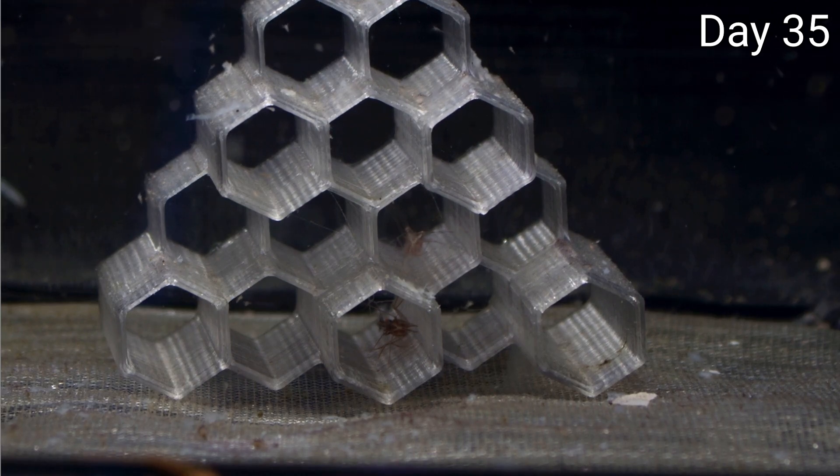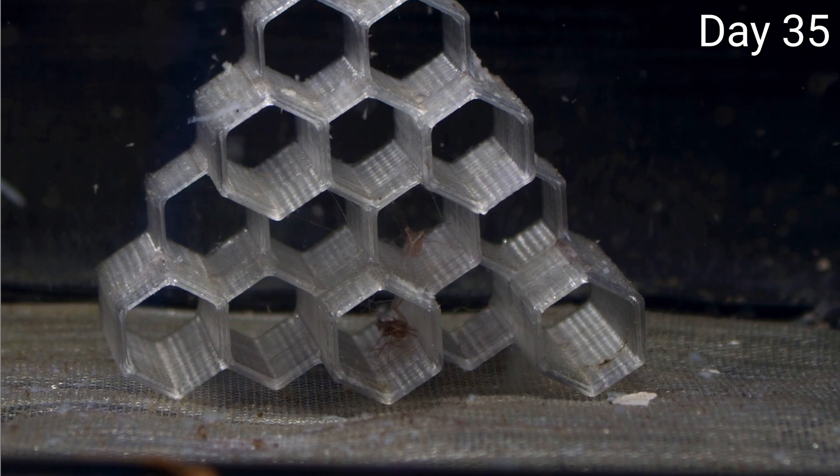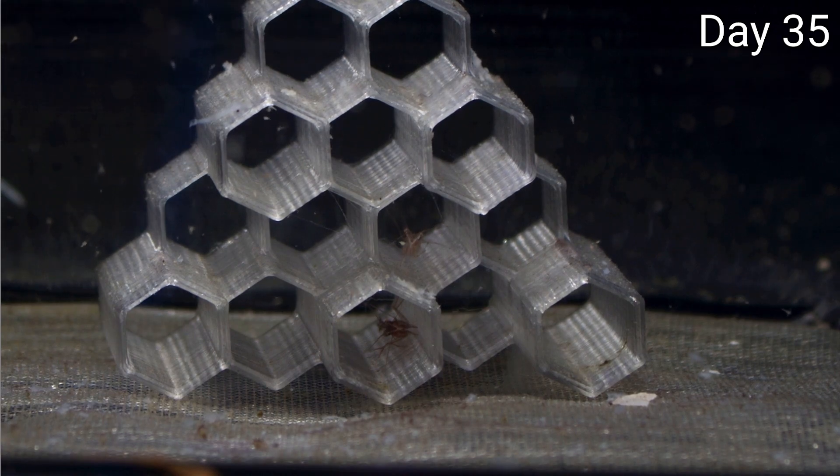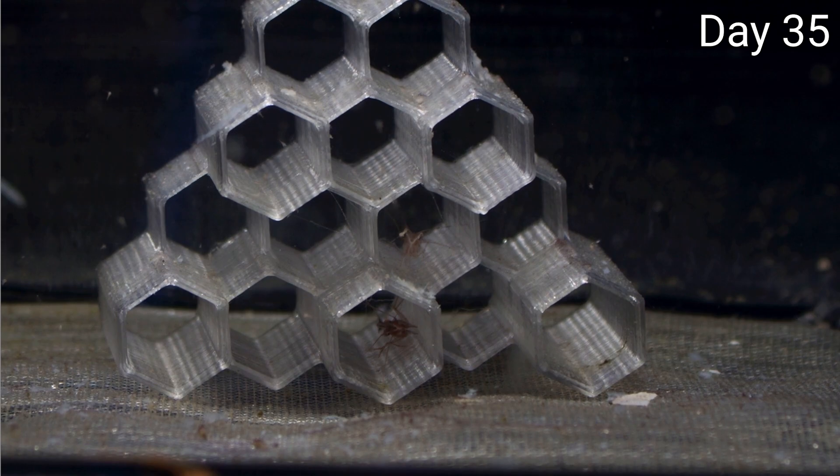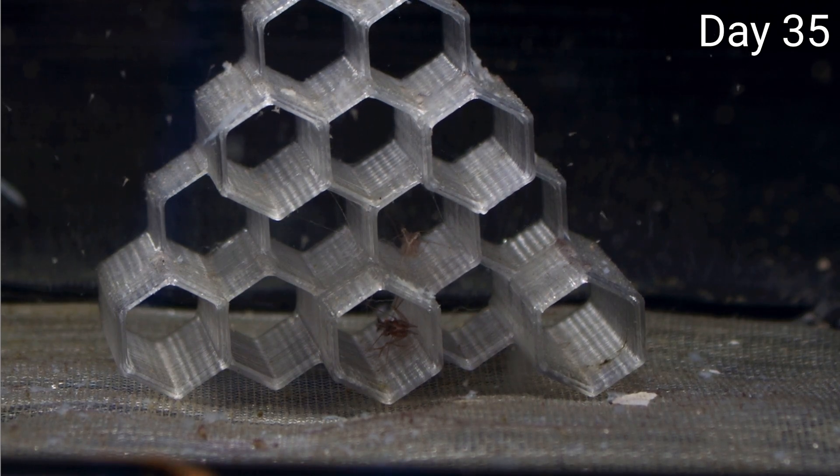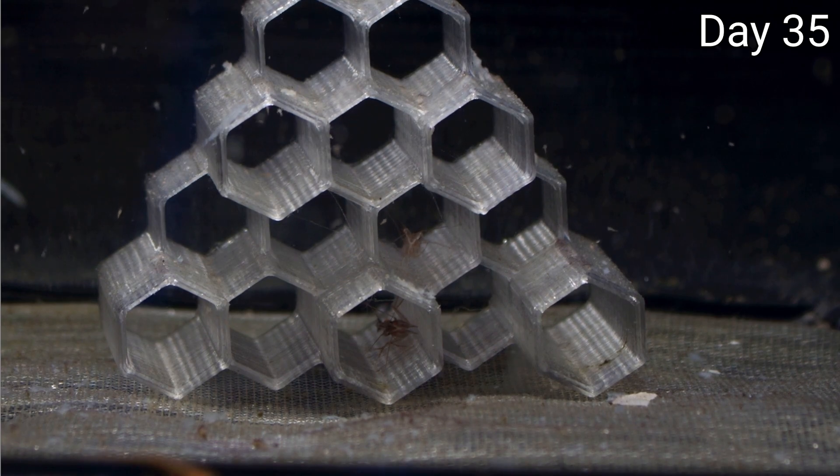That same shrimp, another day later, is the one on the second level here. And as a sense of scale, these are approximately, or not approximately, they're actually six millimeters between facing internal sides. You can see the one that settled first, down below, looking a little darker in color, and maybe slightly bigger. And the one that settled second, the one that was in the last video on the second level there. And acting like normal peppermint shrimp, hiding in caves during the day, and almost never coming out.